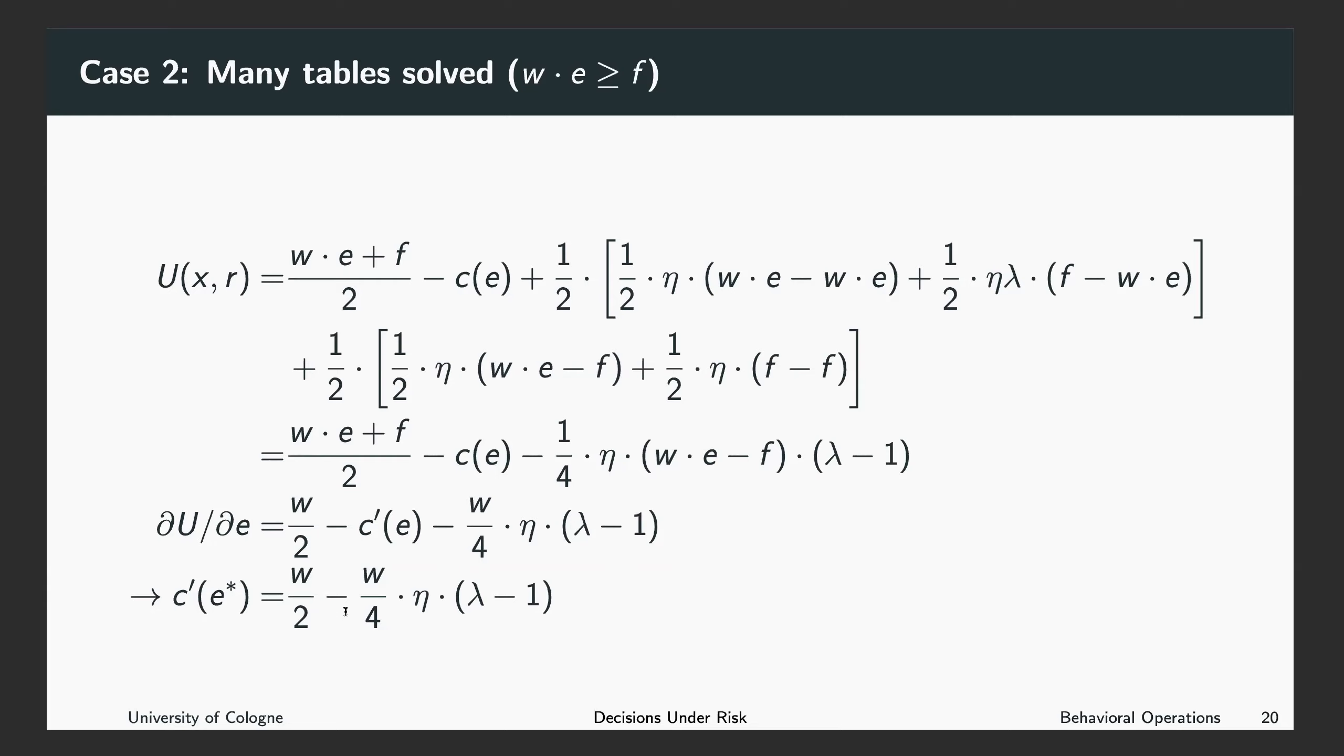Which means more loss aversion implies that I will stop earlier. So this is exactly the opposite of what we saw before. What we saw on the slide before was that as long as I get less payment when I get the piece rate than the fixed payment, loss aversion actually increases the effort I want to exert. Here, the opposite happens. As soon as I receive more money when I get paid the piece rate than the fixed payment, I will reduce my effort when the loss aversion is increased.